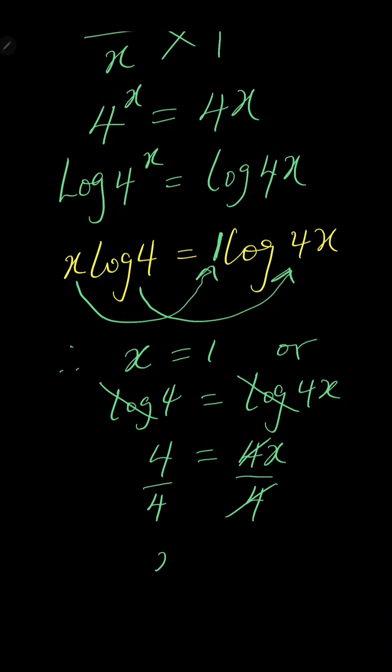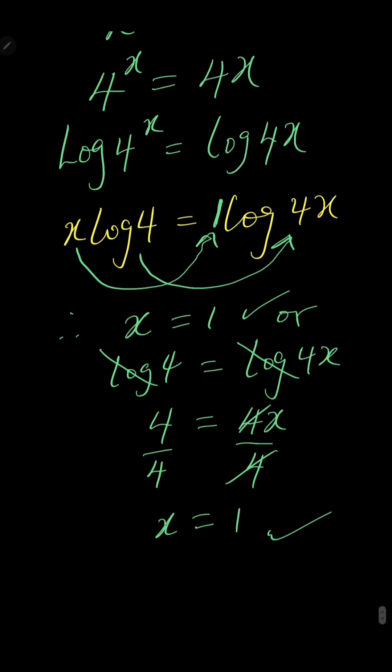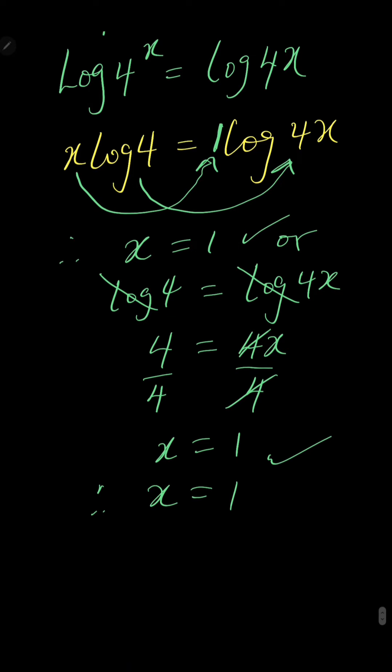This cancels out. 4 divided by 4 is 1. So you see that we are getting 1. So we can conclude that the value of x is equal to 1.